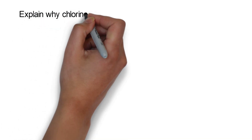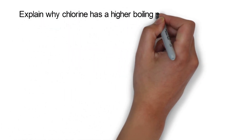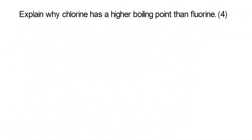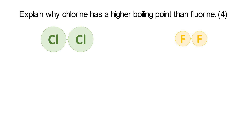Here's one for you to try — this is slightly different because it's not asking about a hydrocarbon, it's asking about Group 7. Explain why chlorine has a higher boiling point than fluorine. Here are your chlorine and fluorine molecules. Have a think about which one is going to have a higher boiling point — pause the video and see if you can work it out.